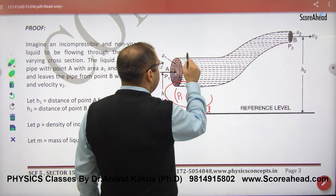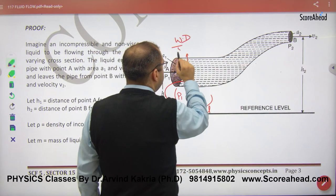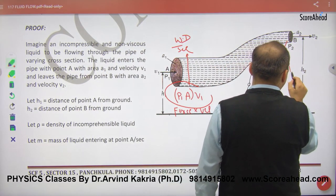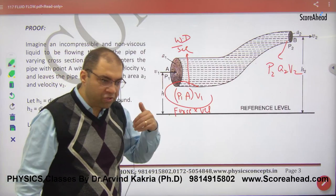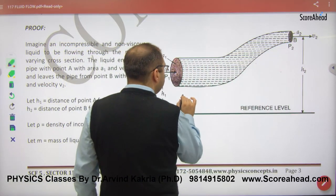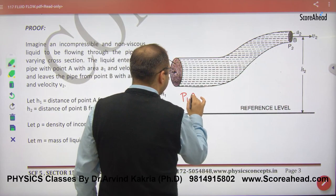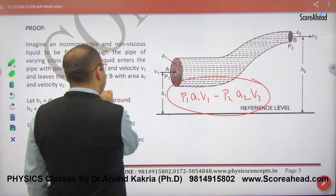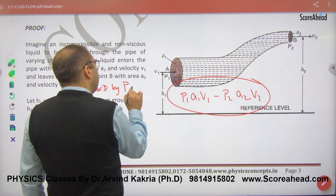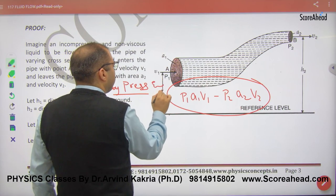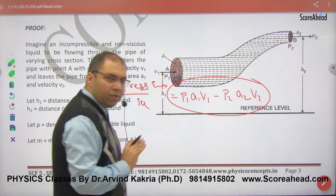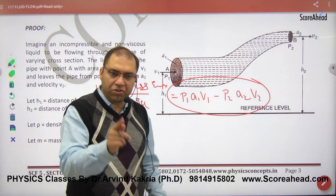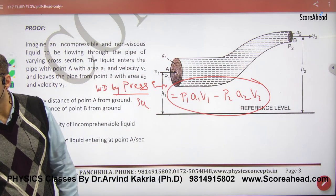So what is this term? Work done per second at entry point. And exit, work done per second, how much? P2 into a2 into v2. So change in pressure, what is pressure energy? What will happen? P1 a1 v1 minus p2 a2 v2. This is work done by pressure energy per second. Why? Because power means energy per second. So this is change in pressure energy per second.